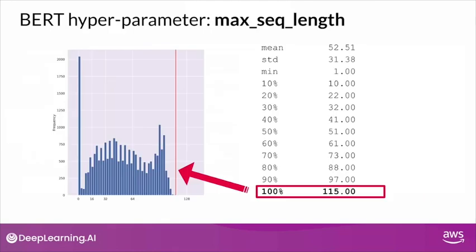A brief note on the maximum sequence length parameter: this is a hyperparameter available on both BERT and RoBERTa models. It specifies the maximum number of tokens that can be passed into the BERT model with a single sample. To determine the right value, you can analyze your dataset. The word distribution of the product review dataset indicates that all reviews consist of 115 words or less. It's not a one-to-one mapping between word count and input token count, but it can be a good indication. For this use case, setting the max sequence length to 128 has been proven to work well.